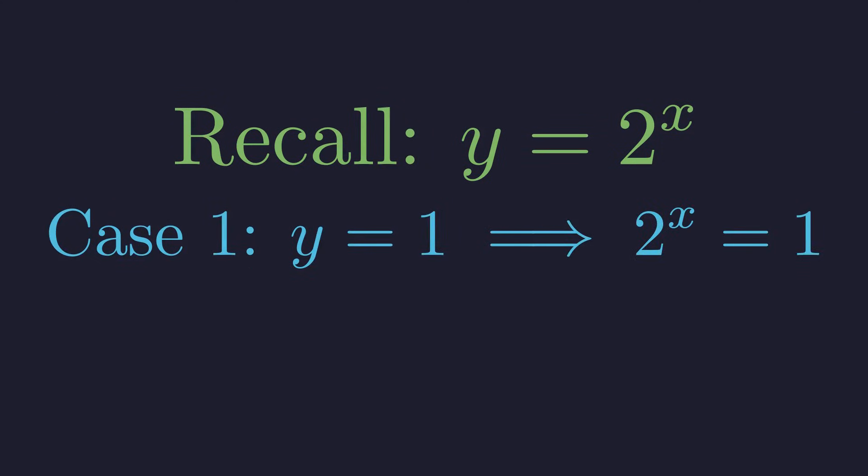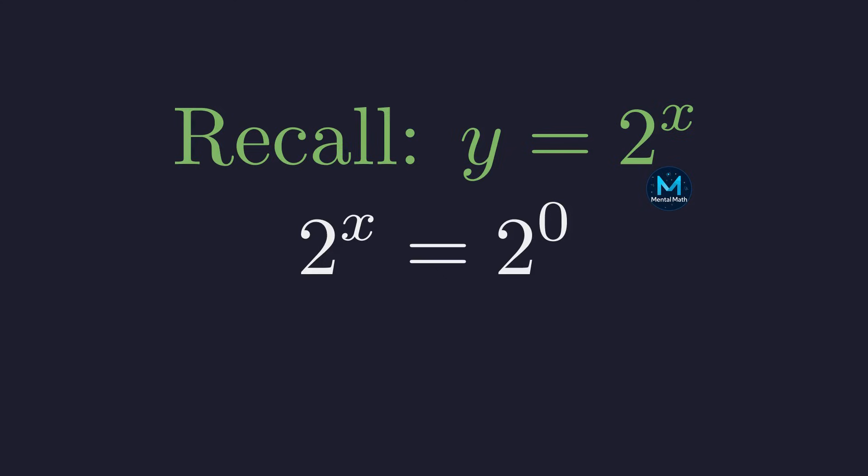This implies that 2 to the power of x equals 1. To solve for x, we need to express 1 as a power with a base of 2. Any non-zero number to the power of 0 is 1. Therefore, we can rewrite the equation as 2 to the power of x equals 2 to the power of 0. Since the bases are equal, the exponents must also be equal. This gives us our first solution: x equals 0.